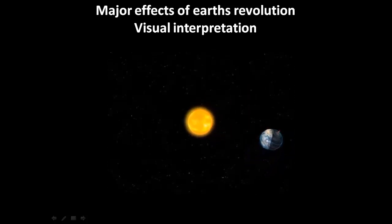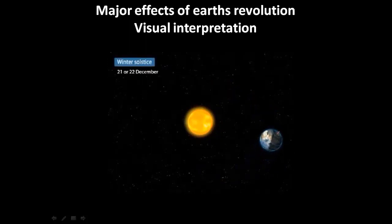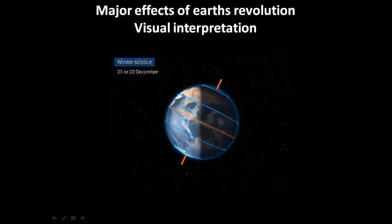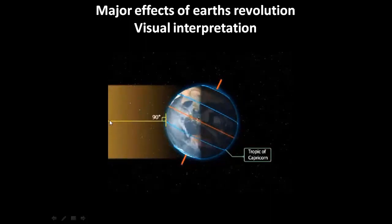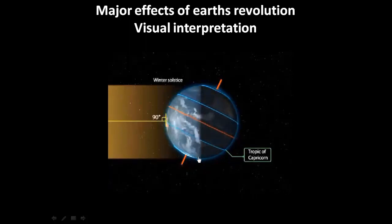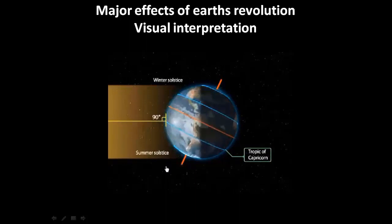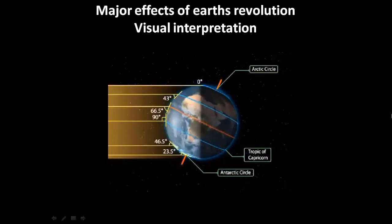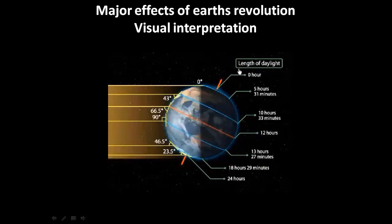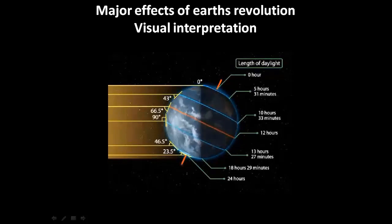While the earth is revolving about the sun, we will now reach the position where earth will experience winter solstice. As you can see, the earth is tilted on its axis, and the direct rays of the sun will fall on the Tropic of Capricorn at 90 degrees. Half the part is illuminated and half is in dark. The northern hemisphere will experience winter solstice and the southern hemisphere will experience summer solstice. You can see the Arctic Circle and Antarctic Circle. Places above the Arctic Circle experience 24 hours of darkness; places below the Antarctic Circle experience 24 hours of daylight.